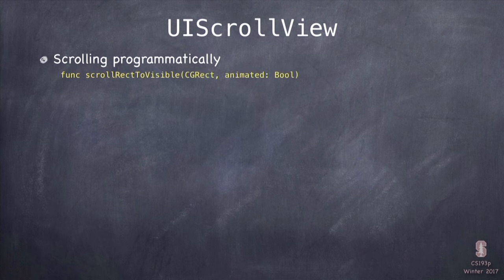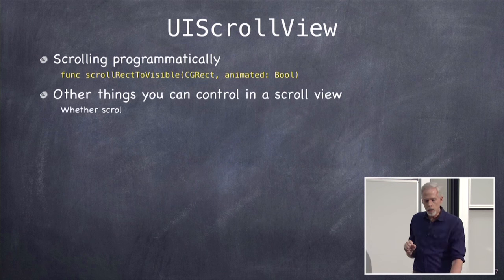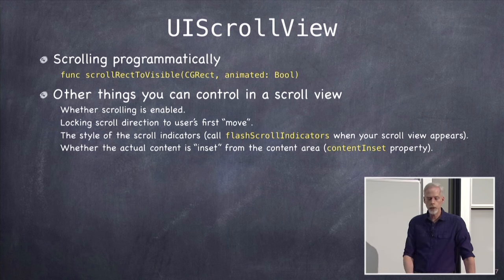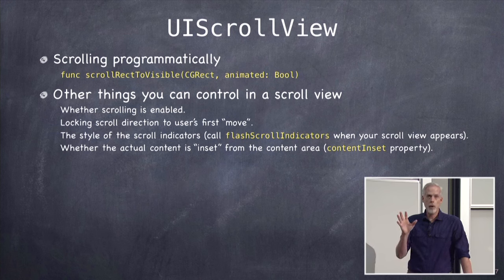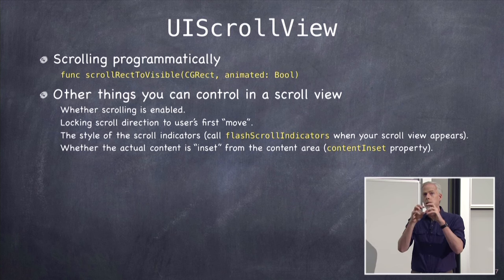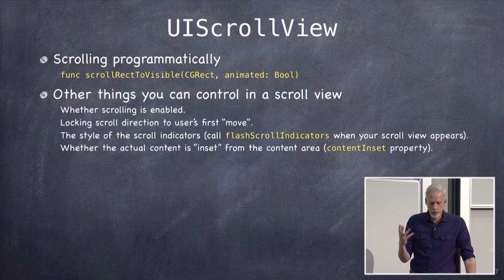Another big piece of scroll view is zooming. All UIViews have a property called their transform — it's an affine transform, which includes translate, scale, and rotate. When you pinch on a view, all it's doing is affecting the scale of its transform. For most views that scales the bits up, making them pixelated. But a view can redraw itself at the new scale — UIImageView does this. To enable zooming, you must set the minimum and maximum zoom scale. By default both are 1.0, meaning no zooming. You also need a delegate method.